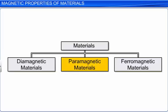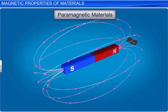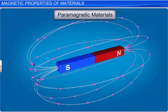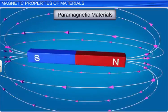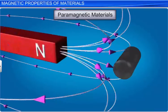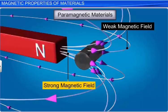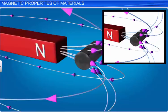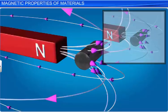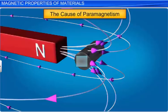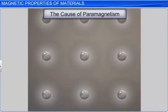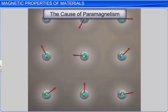Let us discuss about paramagnetic materials. Paramagnetic materials are the materials that are weakly attracted by the magnets. When a bar of paramagnetic material is placed in a non-uniform external magnetic field, it tends to move from a region of weak magnetic field to a stronger magnetic field. The magnetic field lines get concentrated in the paramagnetic material and the magnetic field inside the material increases. In case of paramagnetic material, individual atoms possess a permanent magnetic dipole moment due to the orbiting electrons in the atom.